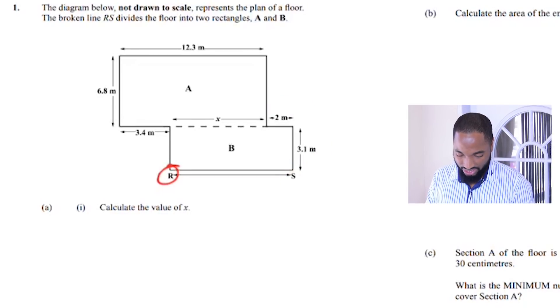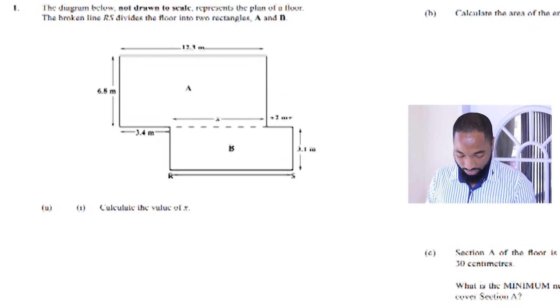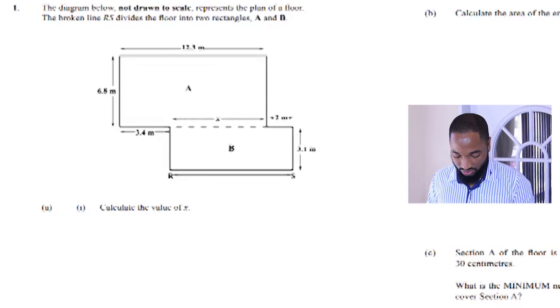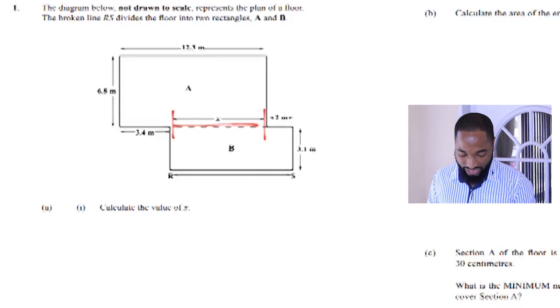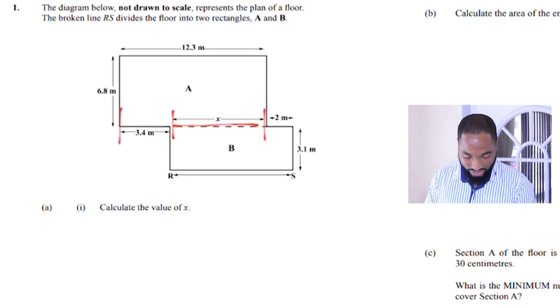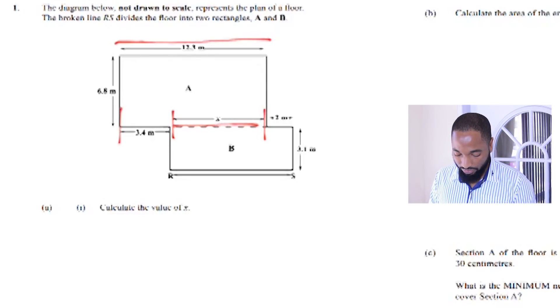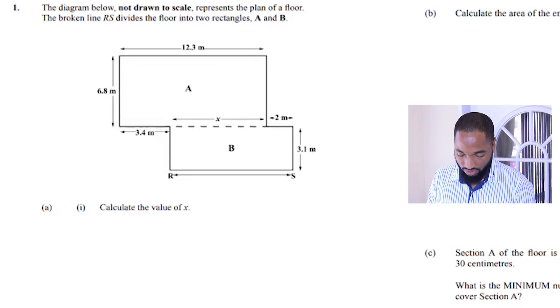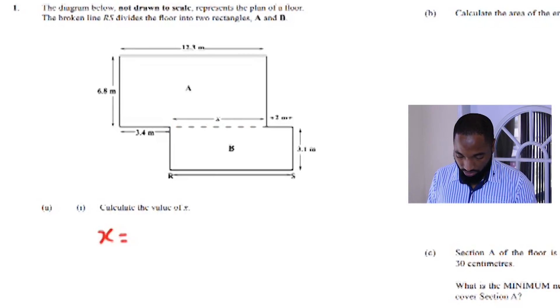Calculate the value of x. You can see x is part of the length. To get the next part of the length, we need to add on 3.4. The entire length, you can use the top reference to get the entire length, which is 12.3. So it's just a simple subtraction: 12.3 take away 3.4.